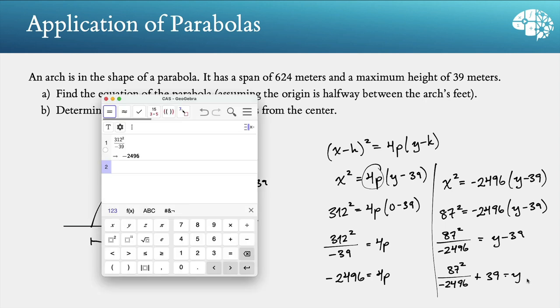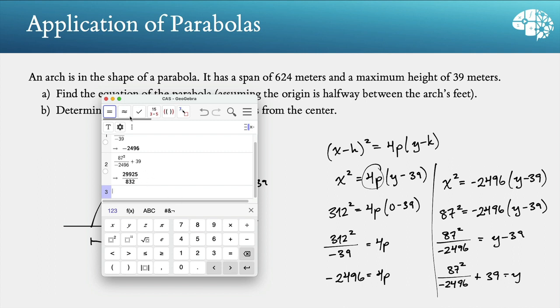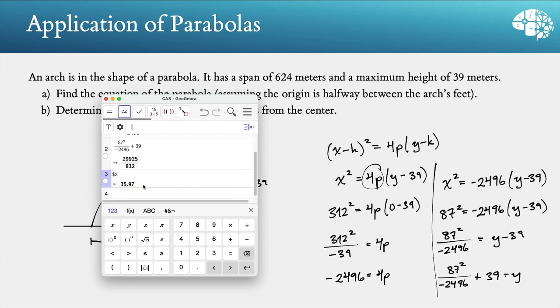So we've got 87 squared over negative 2,496. And then plus 39. Okay. And so that's our answer there. If we want, we can get an approximate.